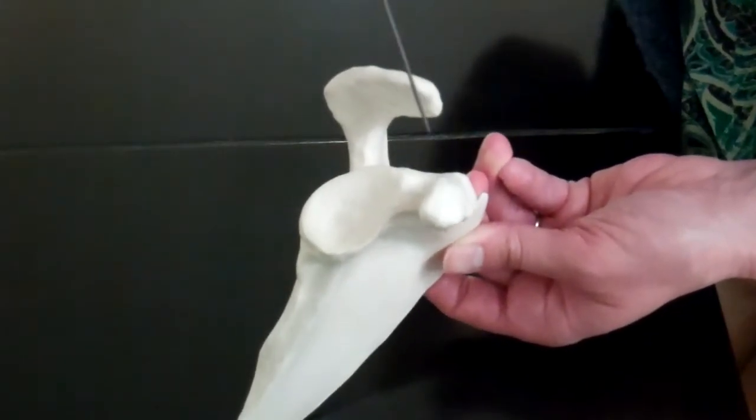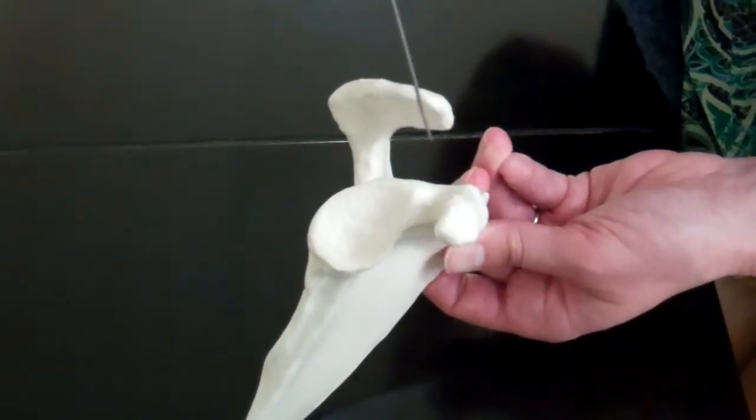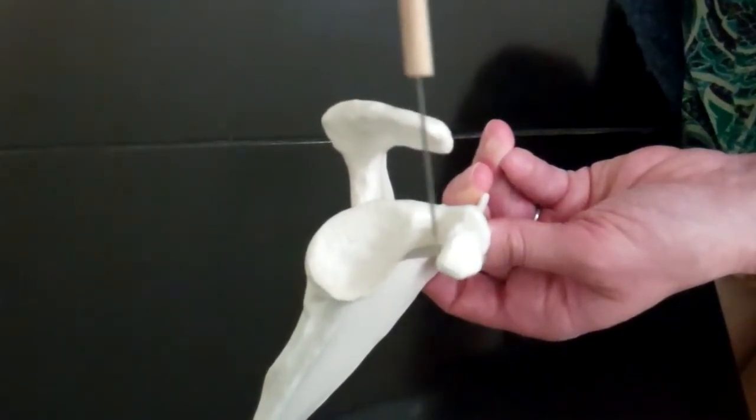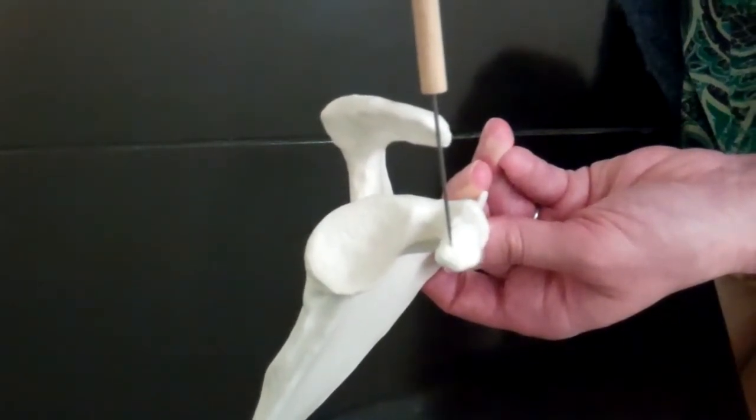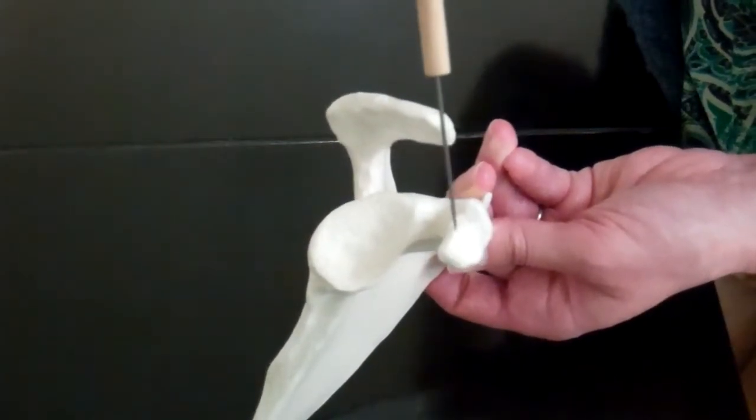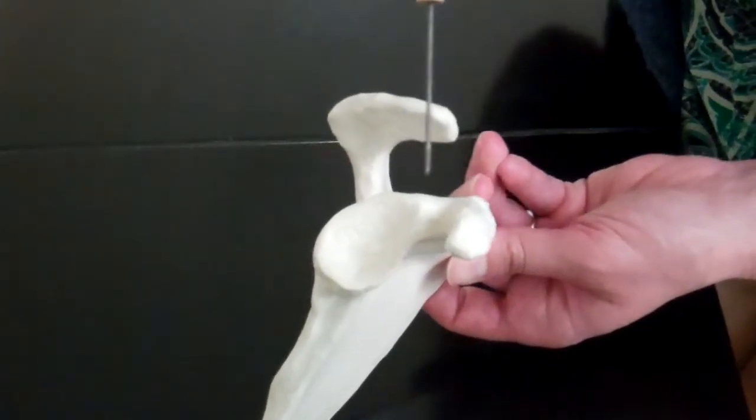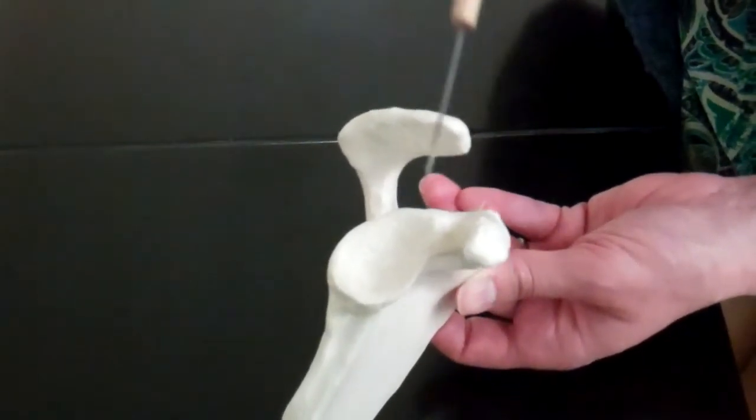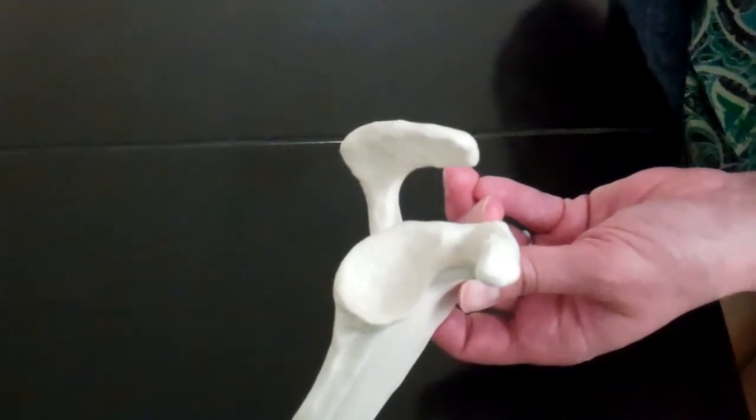Now then we have two of the big huge things on top of our glenoid cavity. This is the acromion which is the bigger one and then the coracoid process which is that smaller one towards the front. You know how I remember coracoid? Coracoid has a C and so does the scapula. So scapula, coracoid.